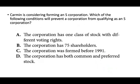Let's take a look at this question. Carmen is considering forming an S corporation. Which of the following will prevent a corporation from qualifying as an S corporation? Do you know the eligibility rules for an S corporation? Option A: the corporation has one class of stock with different voting rights. Yes — you can only have one class of stock, but it can have some voting and some non-voting. So voting rights don't disqualify it. That doesn't prevent us.